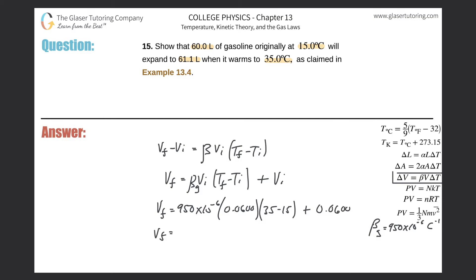Now we just plug it in. 950 times 10 to the minus 6 multiplied by 0.06 multiplied by 35 minus 15, and then add 0.06. What do we get? We get 0.0611.